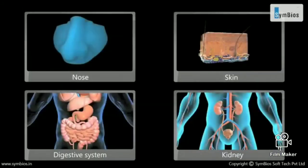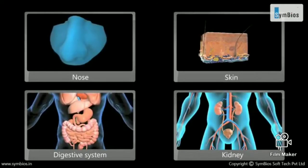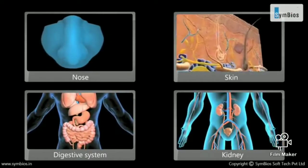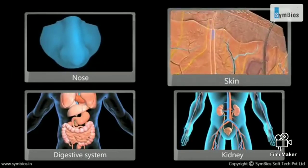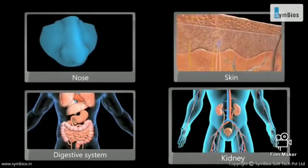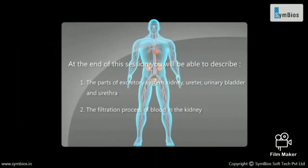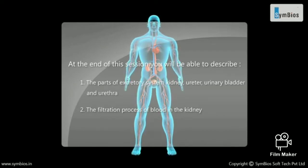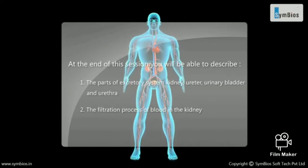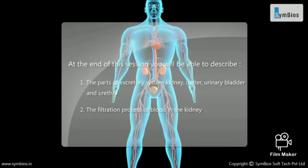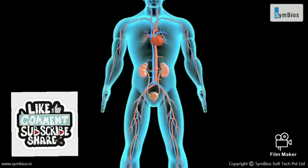The excretory system comprises the organs which help to get rid of waste materials from our body: the nose, skin, digestive system, and the kidneys. At the end of this session, you will be able to describe the parts of the excretory system, like the kidney, ureter, urinary bladder, and urethra, as well as the filtration process of blood in the kidneys.